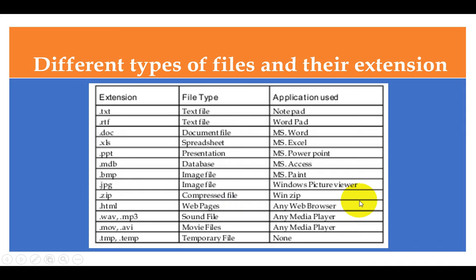Whenever you save a file, it can be saved in different formats. TXT is a text file used by Notepad. RTF is a text file used by WordPad. DOC is a document file used by Microsoft Word (98 to 2003), and DOCX is the format for Word 2007. XLS is a spreadsheet or Excel file. PPT is a PowerPoint presentation used by Microsoft PowerPoint. MDB is a database file used by MS Access. BMP is an image file used by MS Paint. JPG is an image file used by Windows Picture Viewer. ZIP is a compressed file used by WinZip. WAV and MP3 are sound files used by any media player. MOV and AVI are movie files used by Windows Media Player. And .tmp are temporary files.